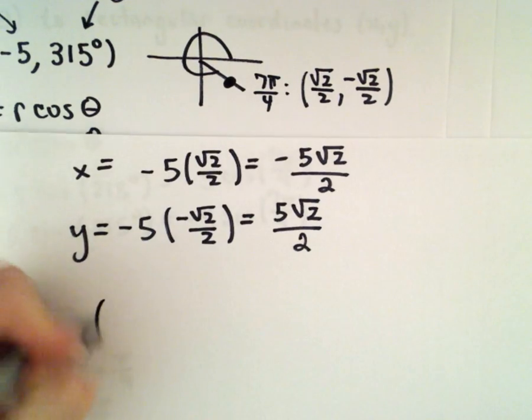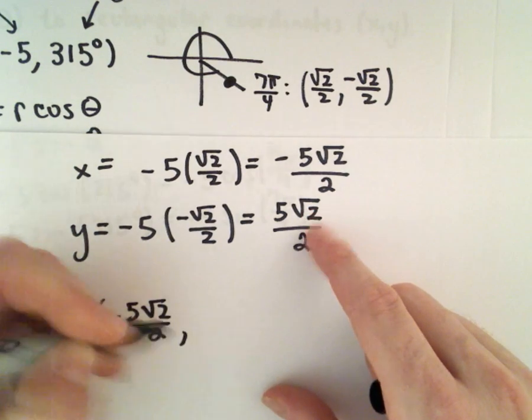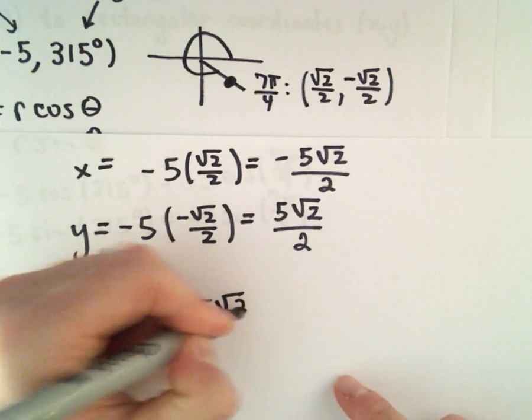So in rectangular coordinates, we would use the point negative 5 times the square root of 2 over 2, comma 5 times the square root of 2 over 2.